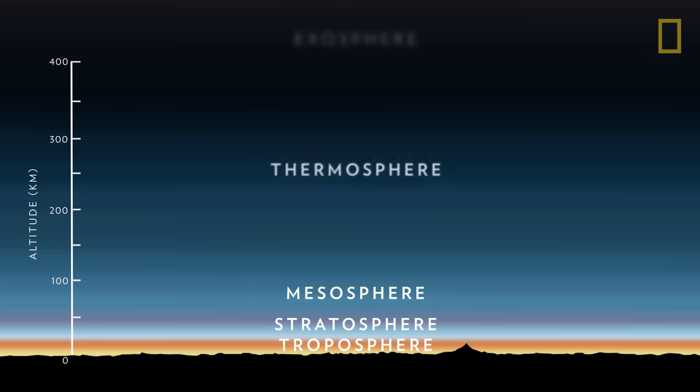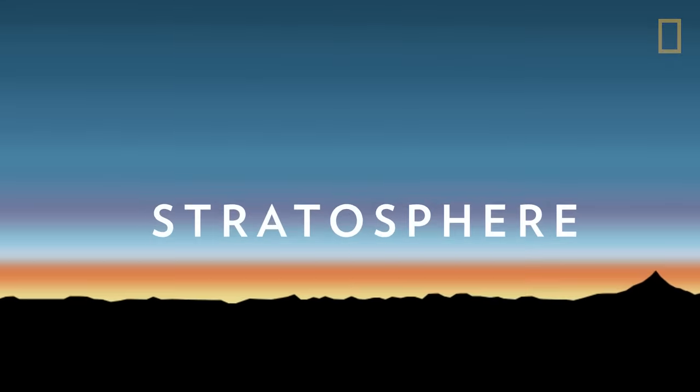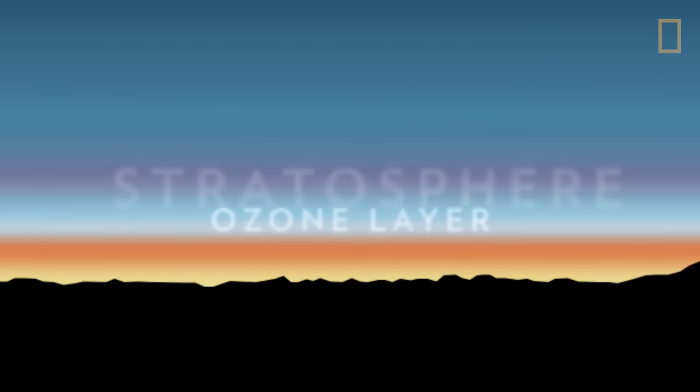Earth's atmosphere is made up of six layers. The second layer, called the stratosphere, contains the ozone layer.